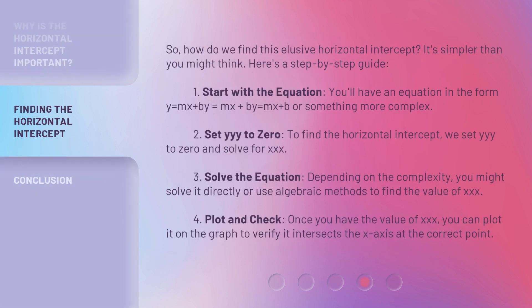So, how do we find this elusive horizontal intercept? It's simpler than you might think. Here's a step-by-step guide. 1. Start with the equation: You'll have an equation in the form y = mx + b or something more complex.